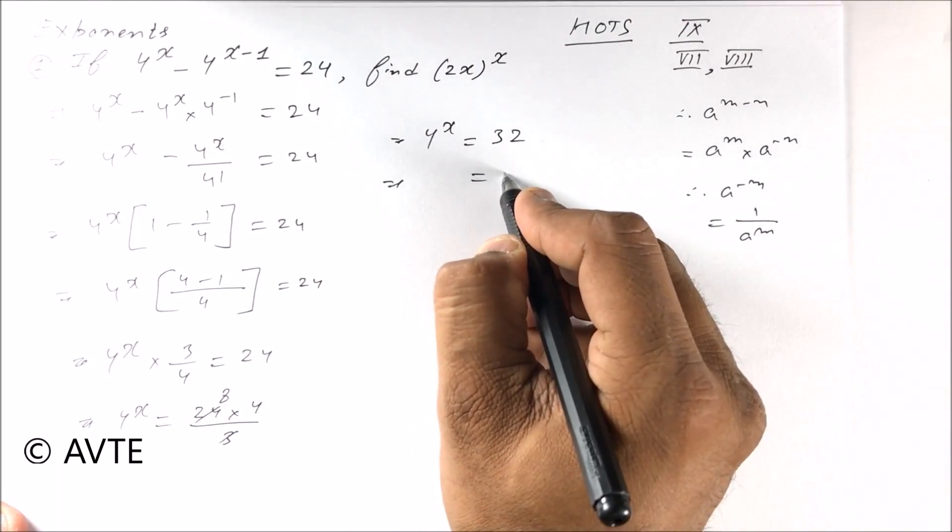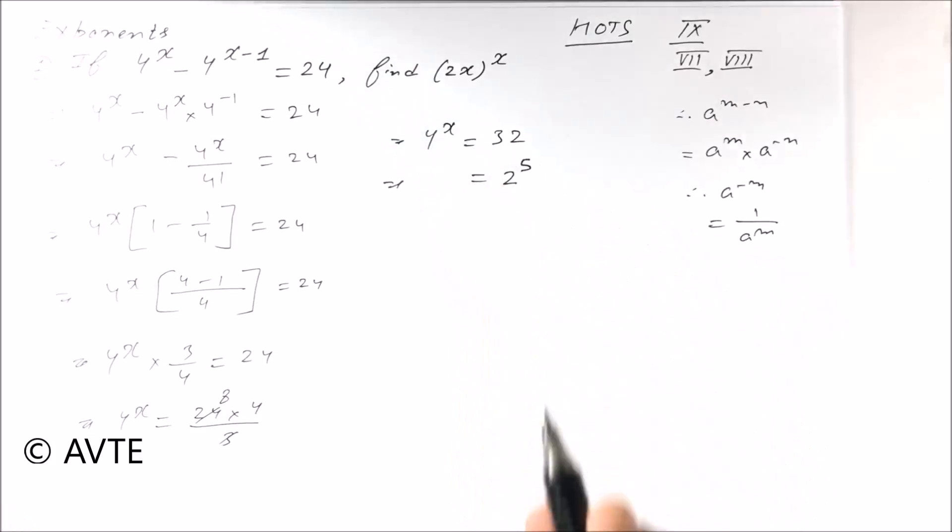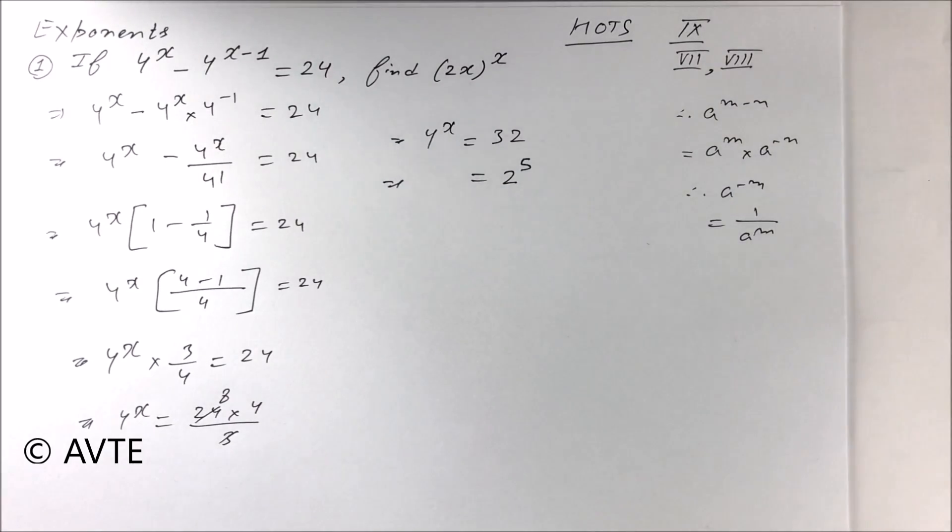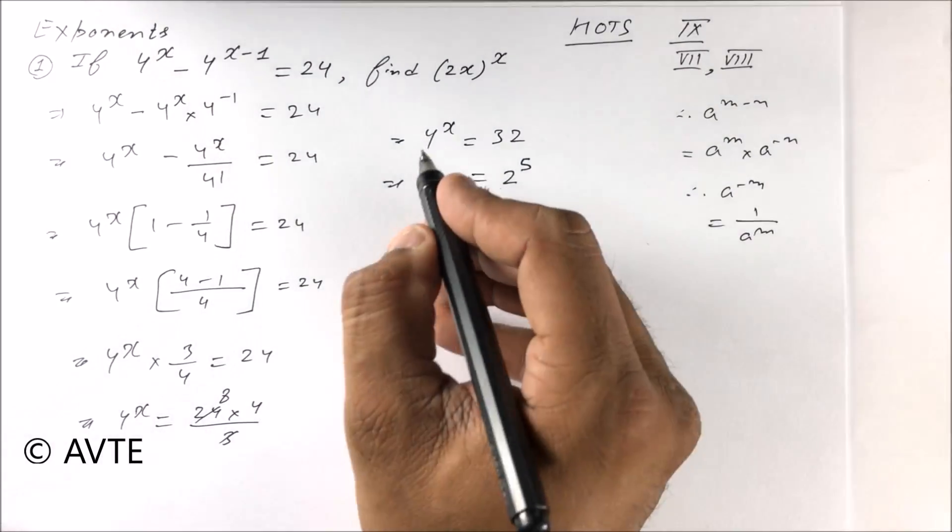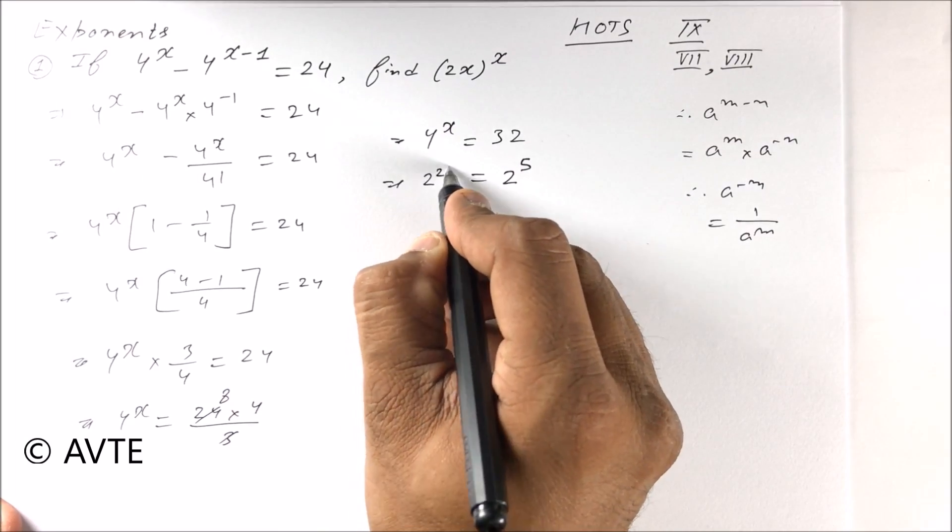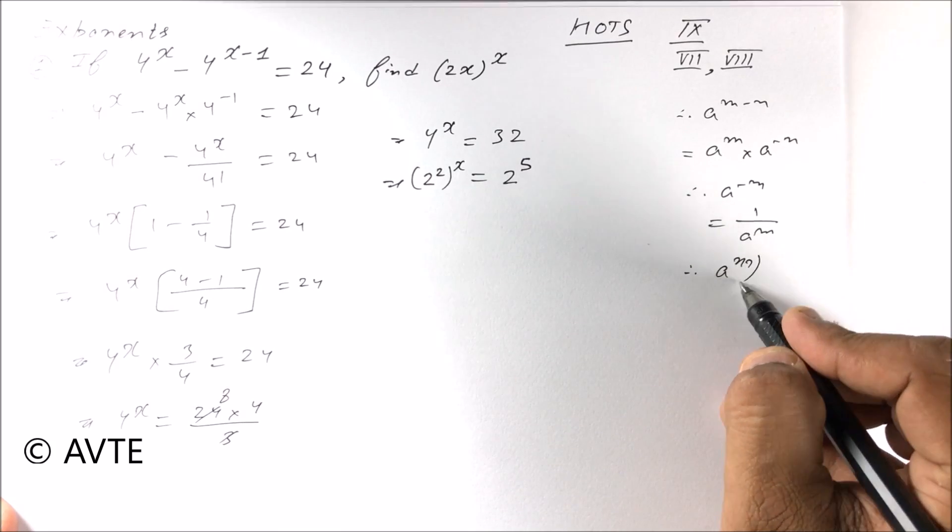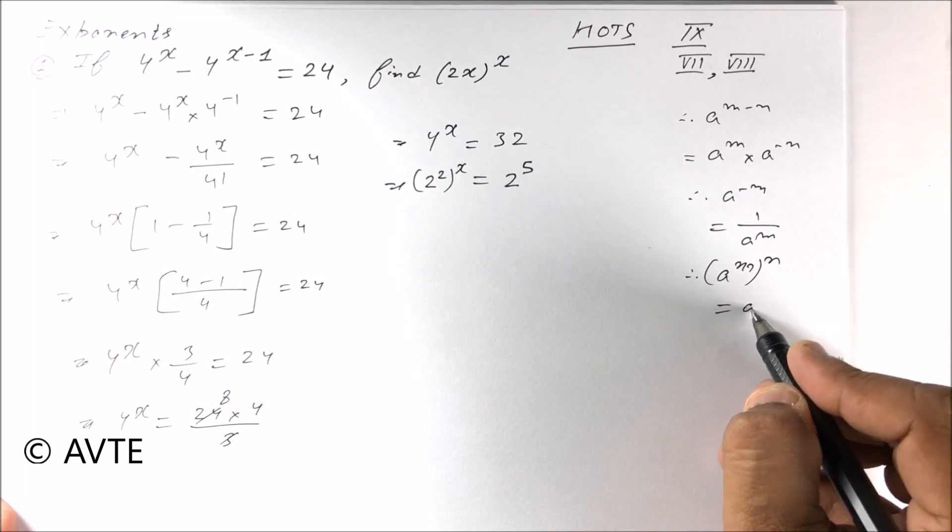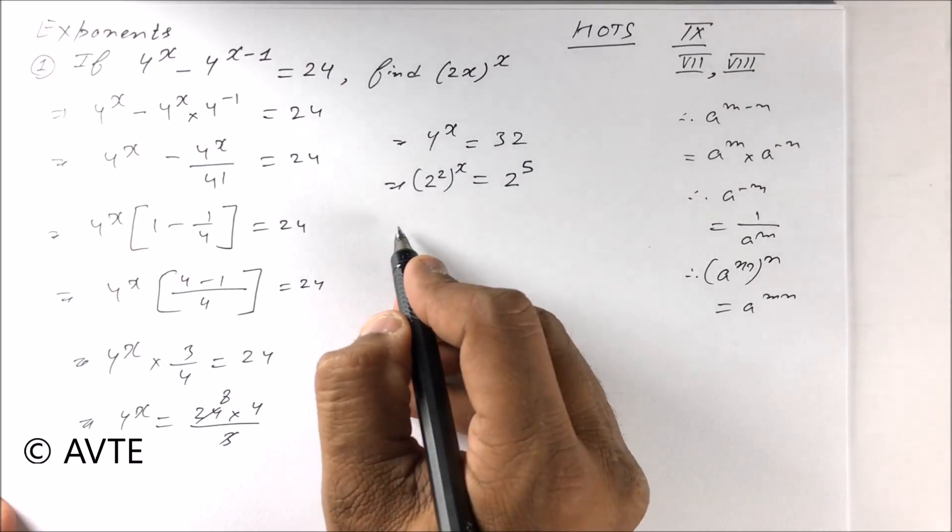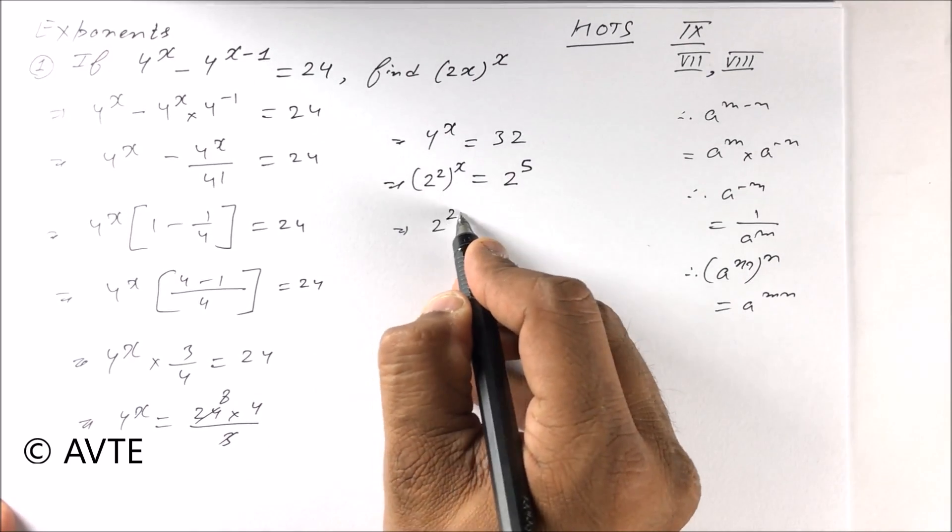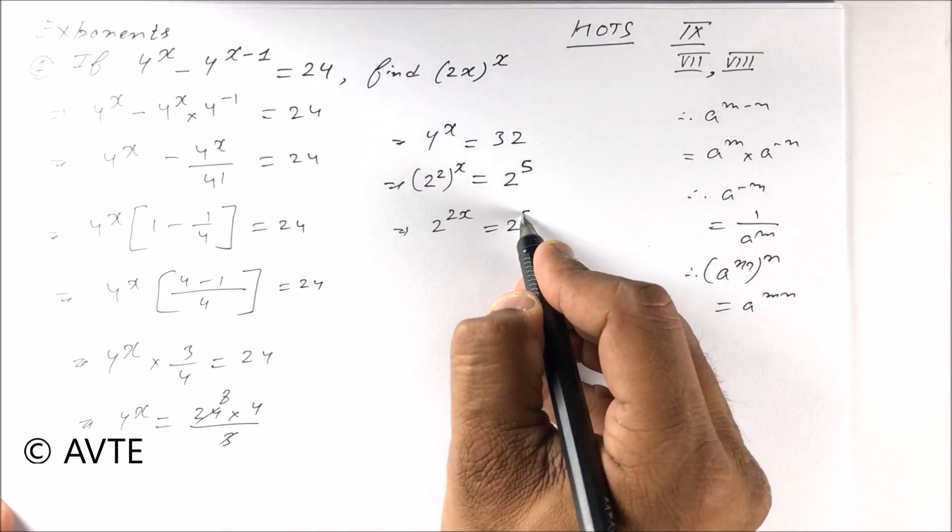So this can be written as 2 raised to power 5. In this case, this is 2 raised to power 2 raised to power x. Again using the law a raised to power m raised to power n is a raised to power mn, it becomes 2 raised to power 2x equals 2 raised to power 5.